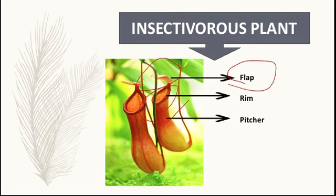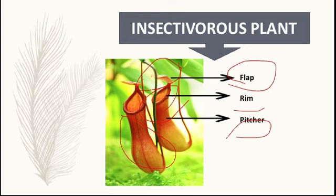This is the pitcher. The pitcher is deep, and the inside wall is difficult to climb, so the insects drown and dissolve in the liquid present inside the pitcher. I hope you all understood what parasitic plants and insectivorous plants are.